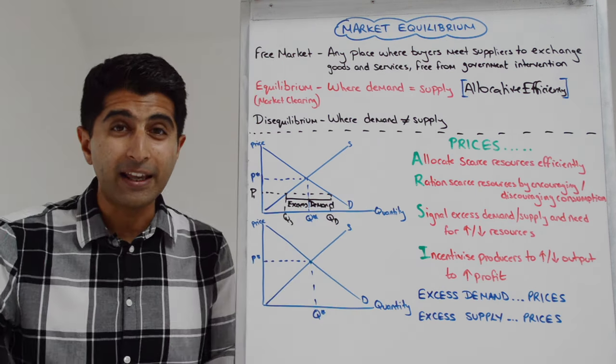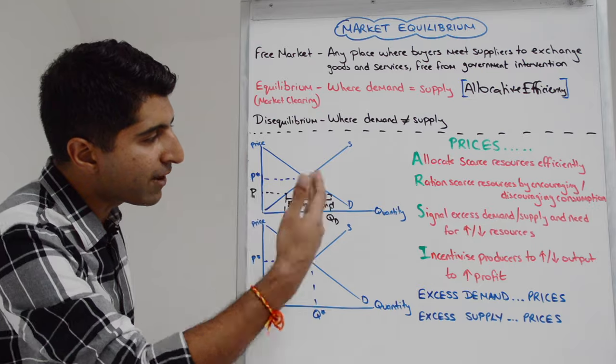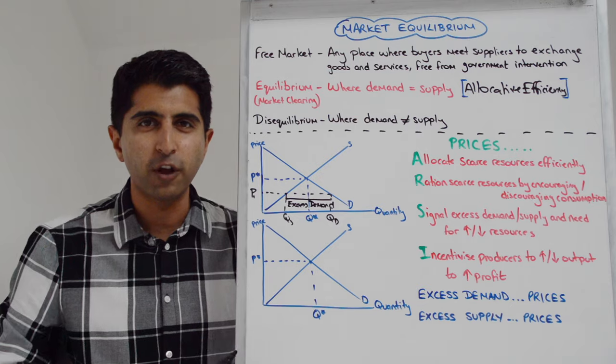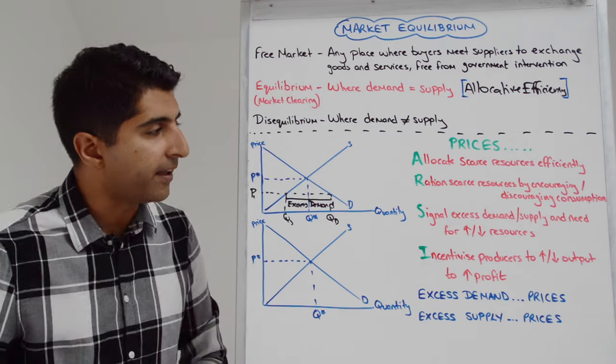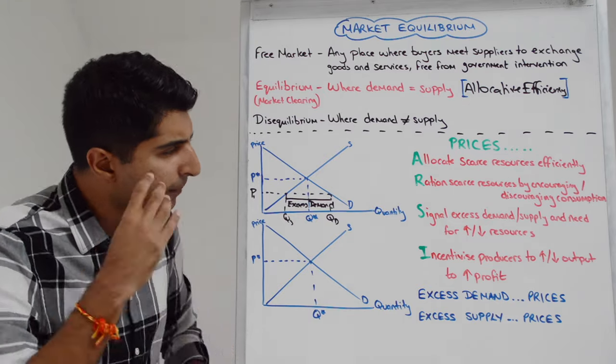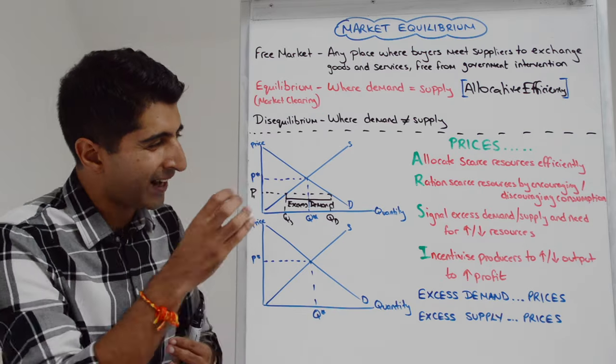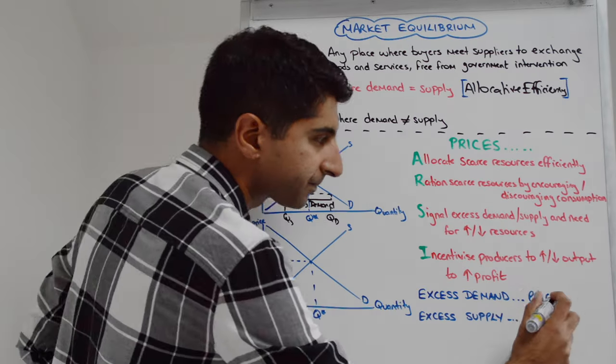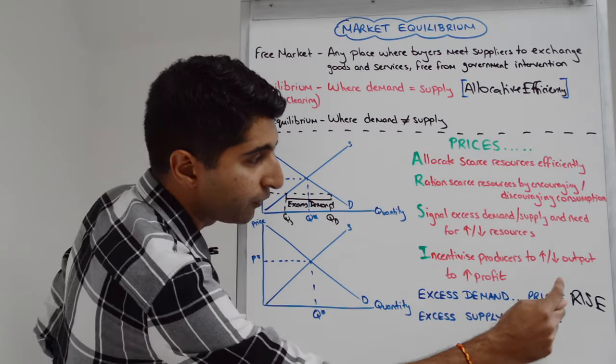Another name for excess demand is a shortage. This is not allocative efficiency. This is a disequilibrium. This is a problem. In reality, this will be seen via long queues of people desperate to buy this good or service. Huge waiting lists of people desperate to access this market. Maybe competition between buyers. What happens naturally is that prices rise at this point. Firms realize they're not able to supply the demand that's out there. They see all these consumers bidding up their prices, desperate to buy this good or service. Prices naturally rise as a result. Excess demand means there is upward pressure on prices. Prices rise.